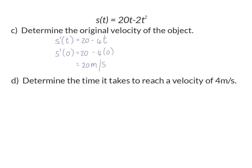Question D: Determine the time it takes to reach a velocity of 4 meters per second. For velocity, we again work with the first derivative, but here we know the velocity is 4 meters per second, so we set it equal to 4. Solving for t, the time at which the velocity is 4 meters per second is at 4 seconds.